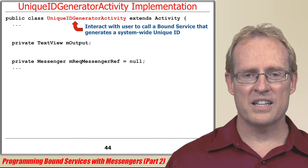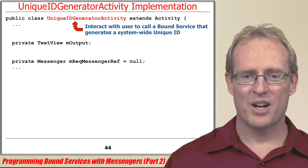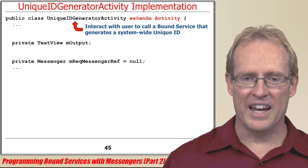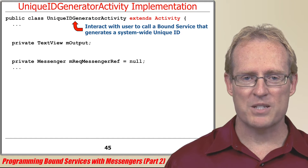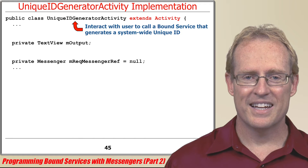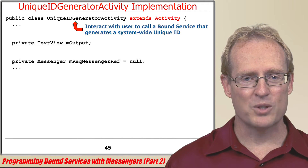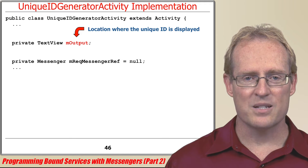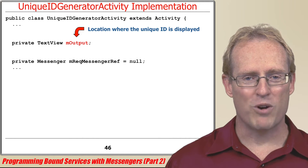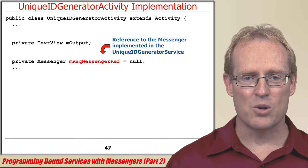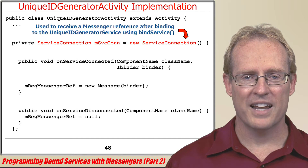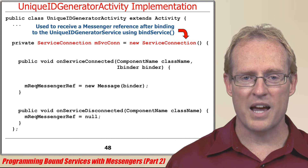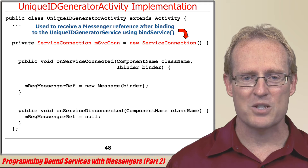We'll start by analyzing the unique ID generator activity, which extends Activity and interacts with the user to call a bound service that generates a system-wide unique ID. This activity defines several data members, including a text view that defines a location where the unique ID is displayed to the user, and a reference to the messenger implemented in the unique ID generator service. A service connection data member is also defined and used to receive a messenger reference after the activity calls bindService with an intent that designates the unique ID generator service.